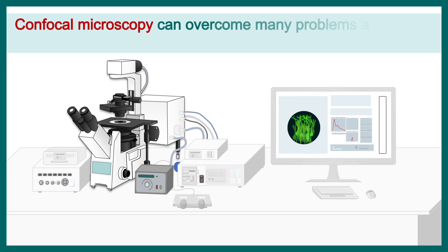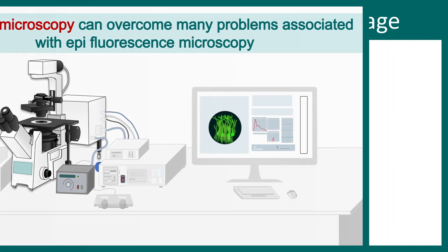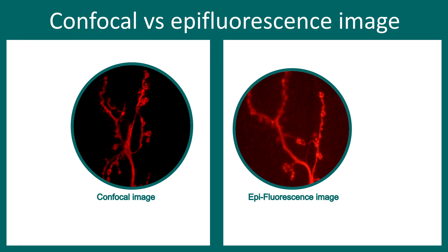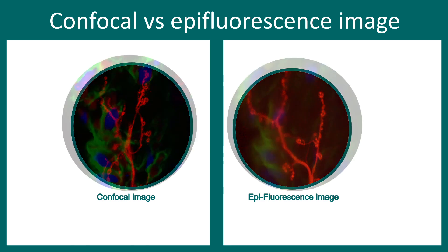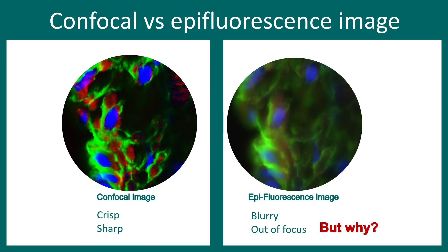Confocal microscopy overcomes many problems associated with epifluorescence microscopy. Looking at two images of Drosophila neuromuscular junctions — the same cells, the same field — one imaged with confocal and one with a normal epifluorescence microscope: the epifluorescence image looks blurry and out of focus, whereas the confocal image looks crisp, sharp, and detailed. This demonstrates clear differences in resolution and image quality.